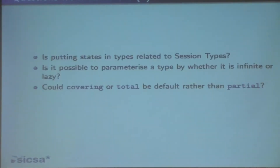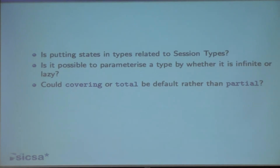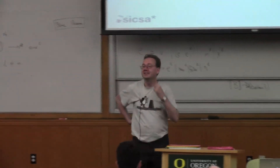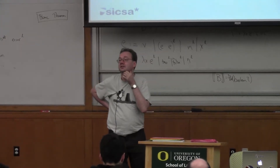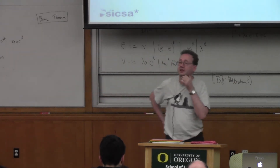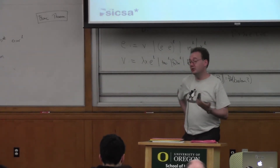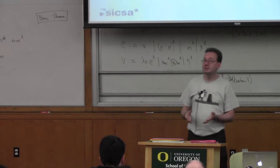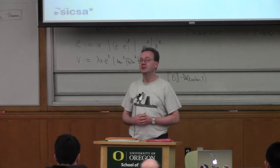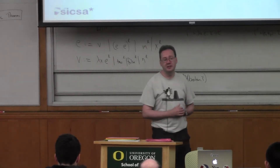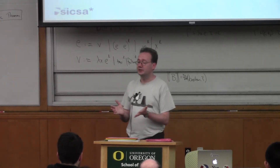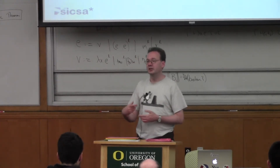Could covering be total rather than partial by default? Are the operational semantics for the infinite types written down? Not by me. But all that happens is that if the runtime system sees a delayed term, that's exactly what it does — it delays until it's forced. In practice, it's the same as abstracting over a unit. There isn't anything particularly magical going on there.